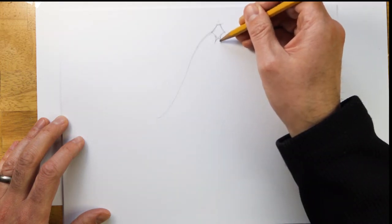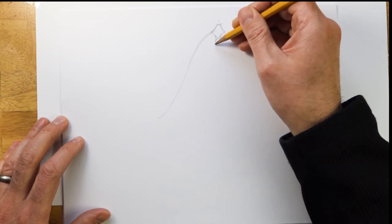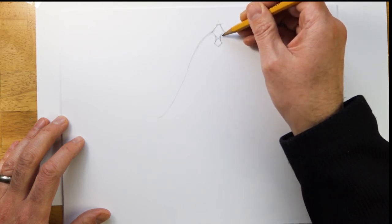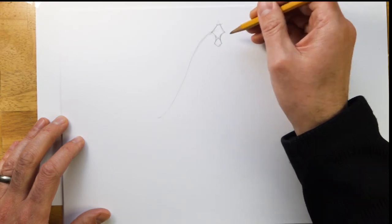So we'll widen that a little bit. And so there's the nose and the mouth area there.